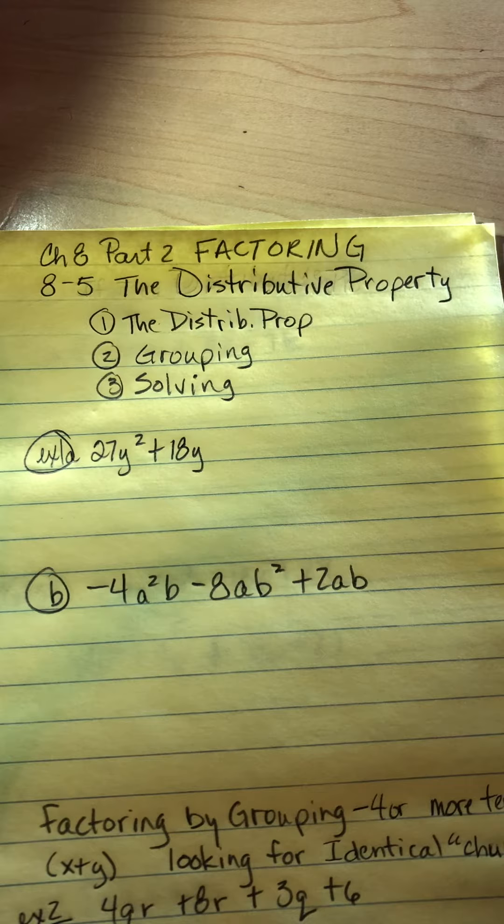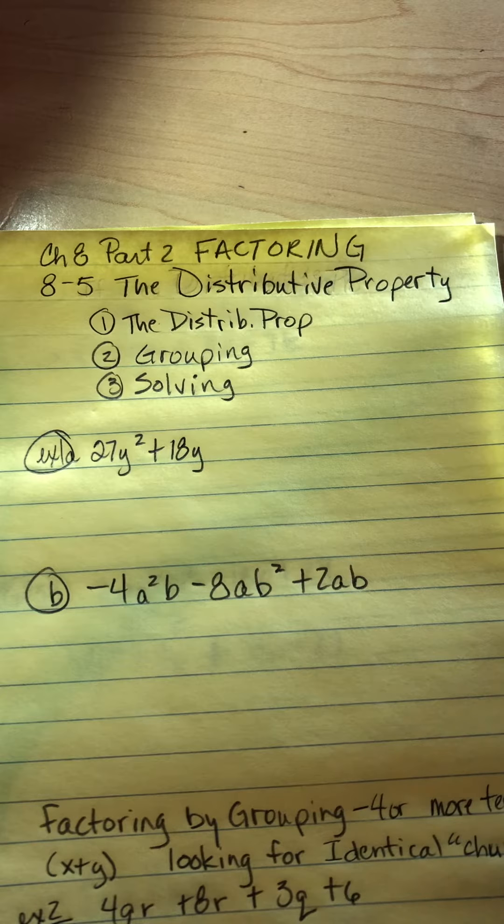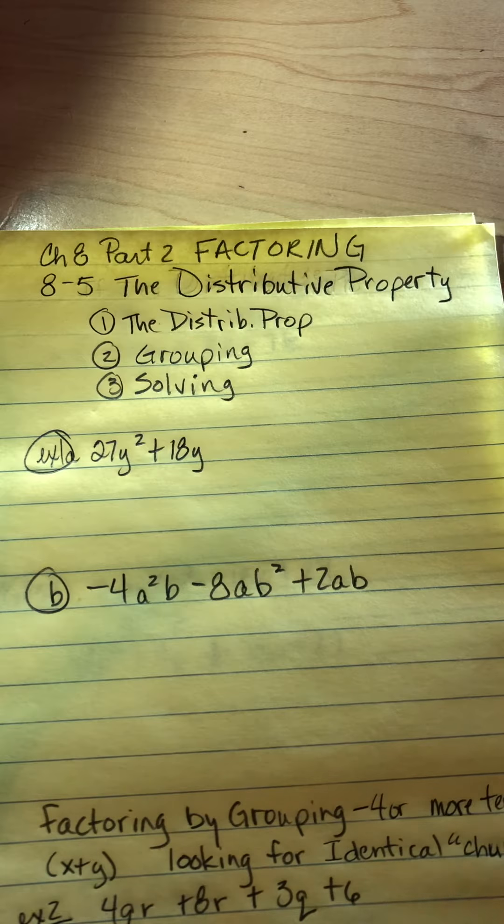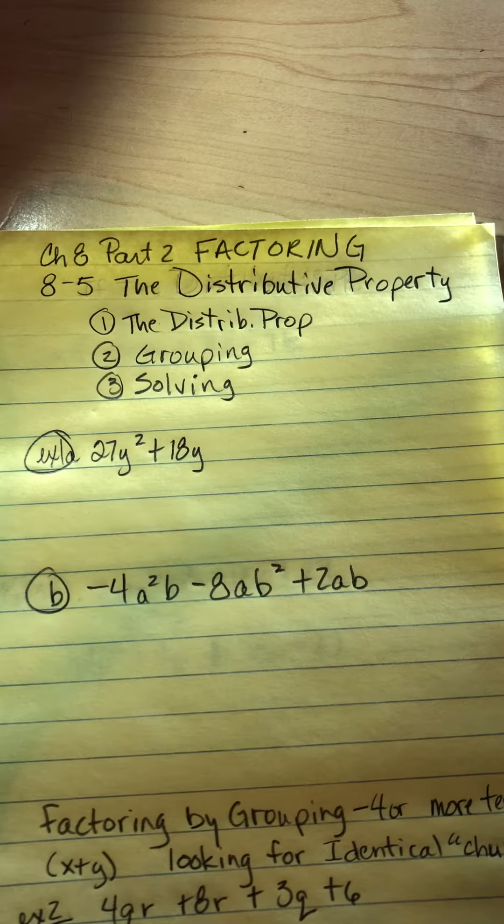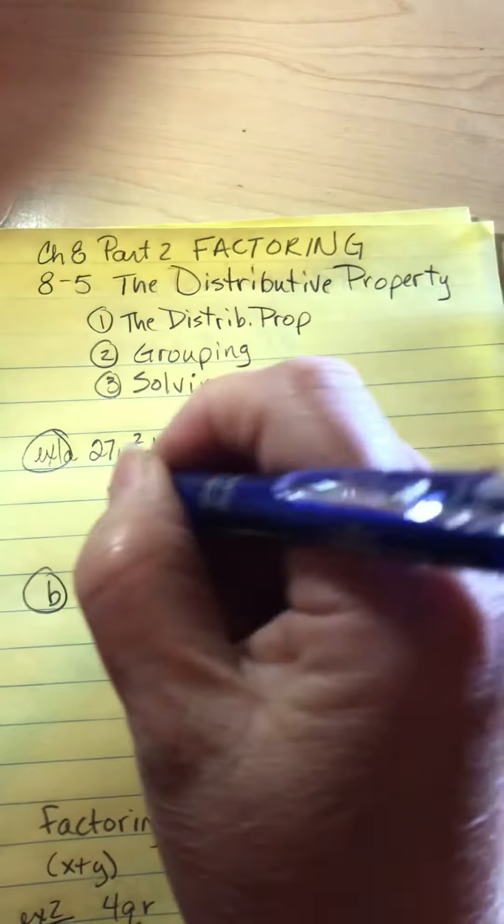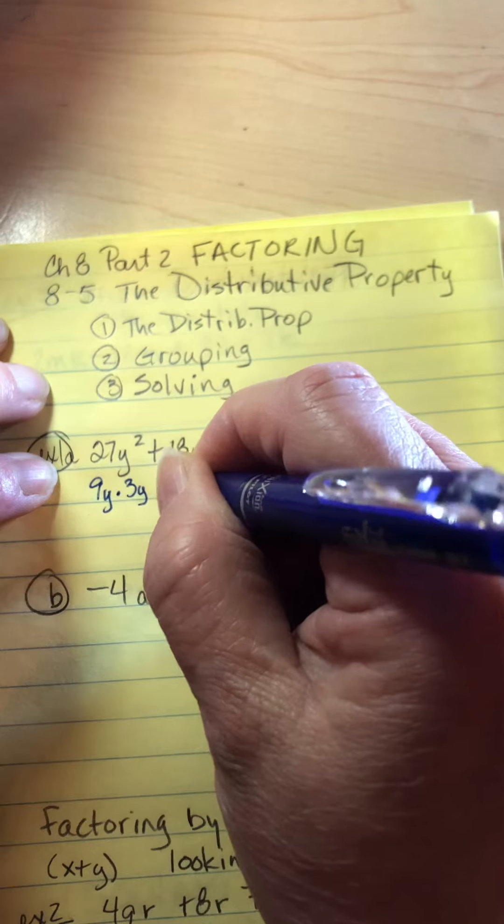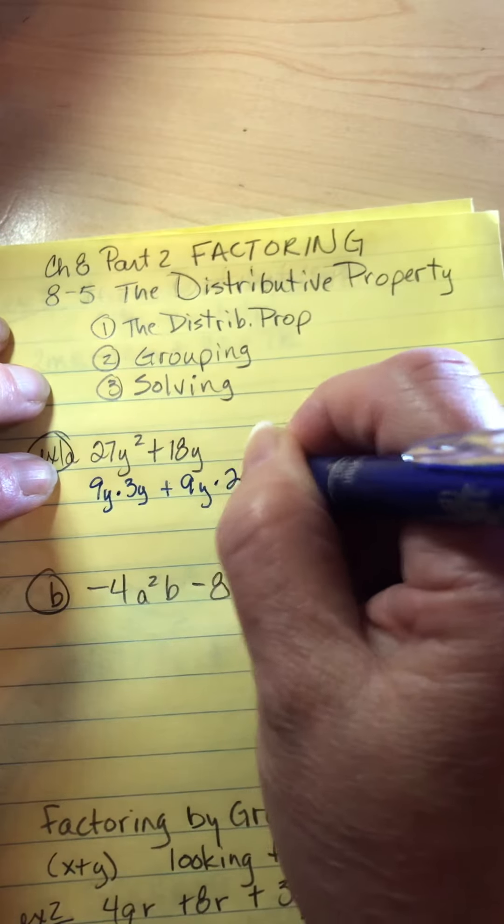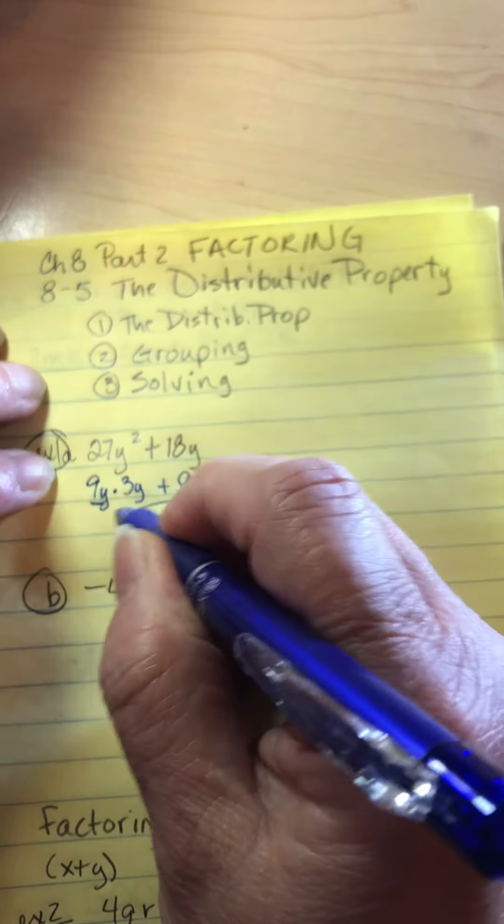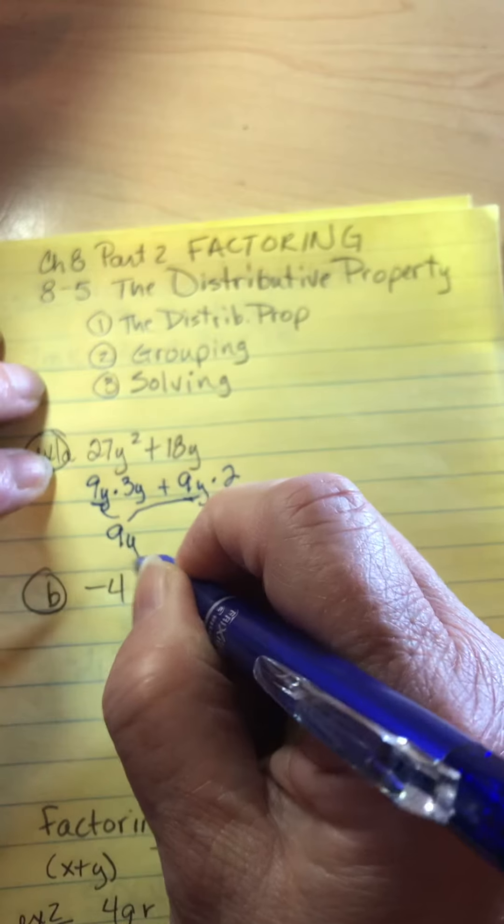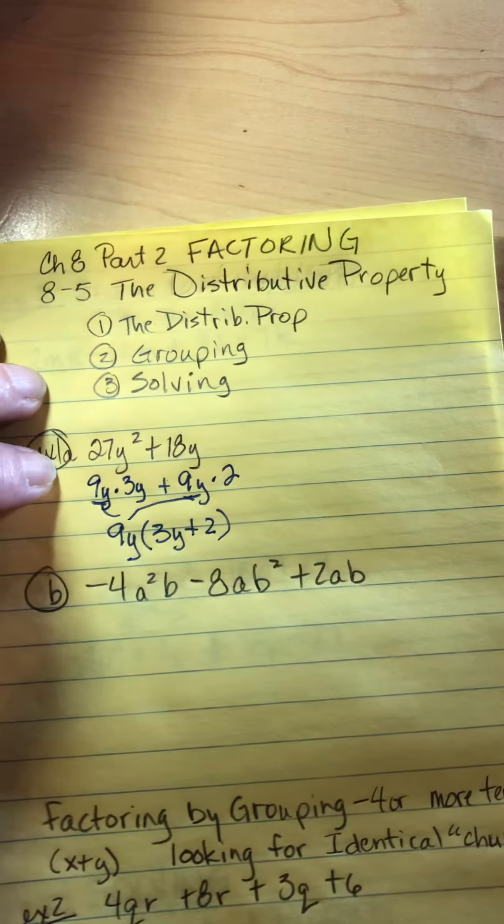In example 1, where we're talking about the distributive property, the book does not give you enough credit for being able to look at things and say, hey, 9 goes into 27 and 18 and they both have a y. So that's what you're going to take out. This is 9y times 3y, plus 9y times 2. This is my greatest common factor. So I'm going to divide it out, and then I'm going to have 9y times 3y plus 2.